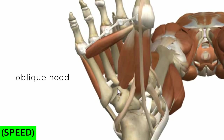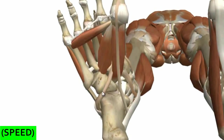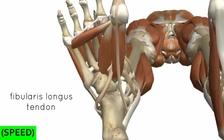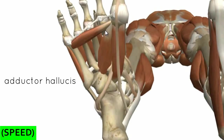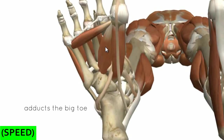The oblique head has fibres angled obliquely. It originates on the bases of metatarsals two to four and also on the fibularis longus tendon - which enters the foot laterally and crosses under the cuboid bone to insert medially. It inserts at the base of the proximal phalanx of the great toe. As the name suggests, this muscle adducts the great toe at the MTP joint. Both heads are innervated by the lateral plantar nerve.